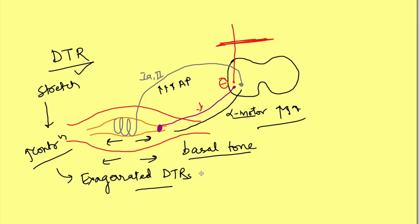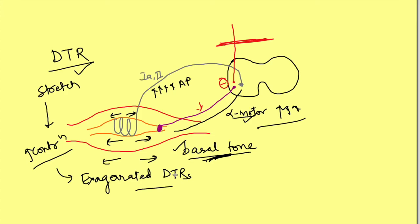With the same logic we can explain hypertonia in UMN lesion. The stretch reflex maintains the basal tone of the muscle — the resting length of the muscle generates some afferent activity and keeps the muscle in a somewhat contracted state at rest. With loss of inhibition of the gamma motor neuron, since the gamma motor neuron is now active, the baseline stretch of the intrafusal fiber is greater, leading to more action potentials, more alpha motor neuron activity, and an increase in the basal tone of the muscle — hypertonia. So it is the same mechanism causing both hypertonia and exaggerated deep tendon reflexes in UMN lesion.